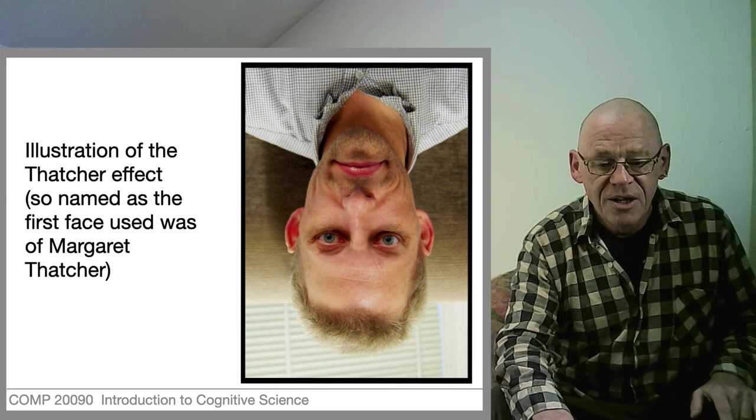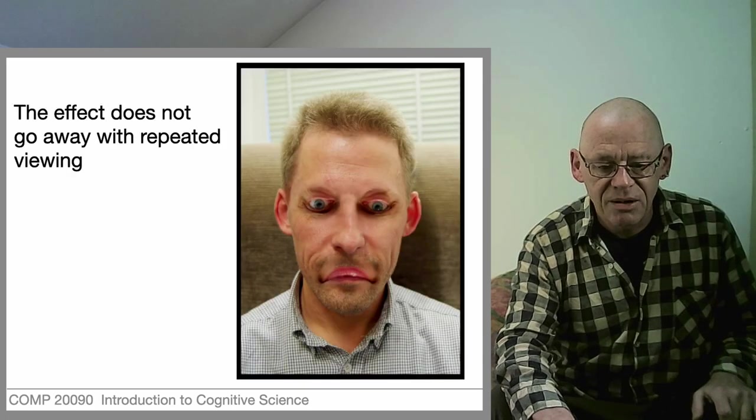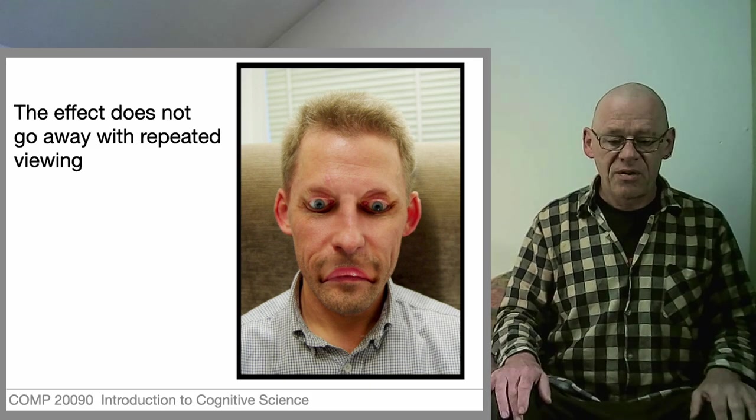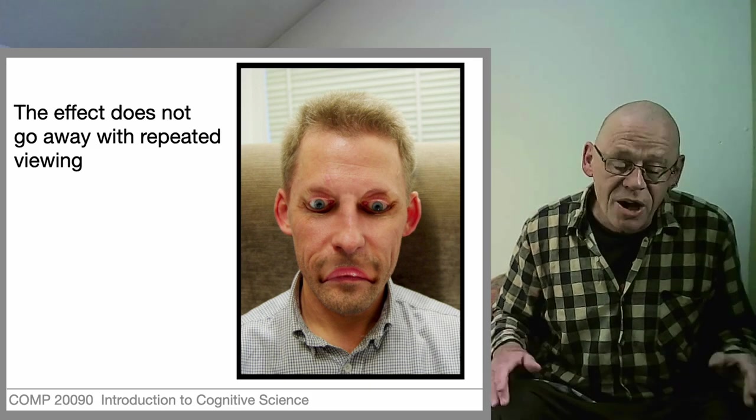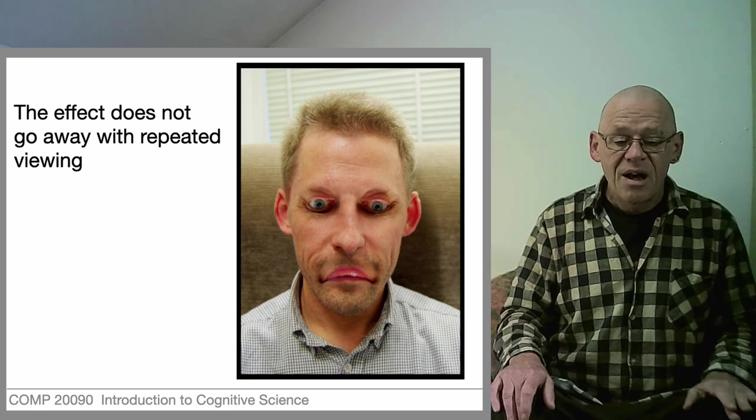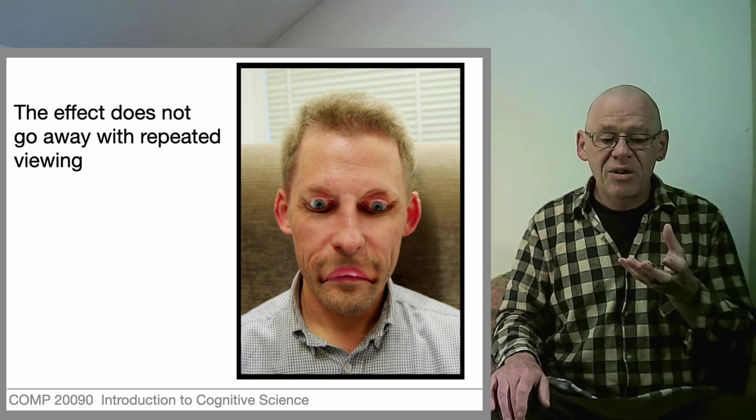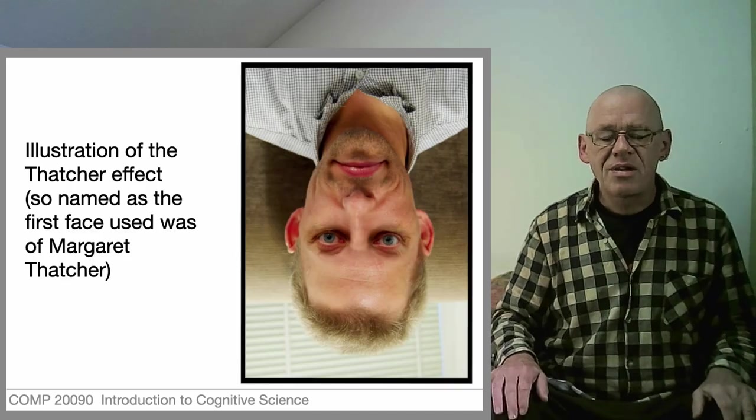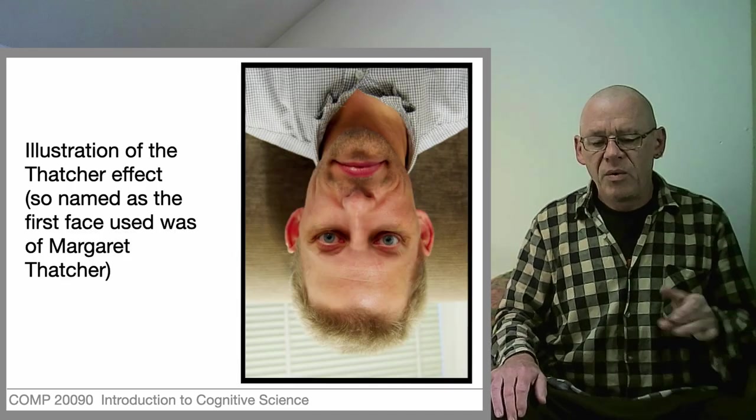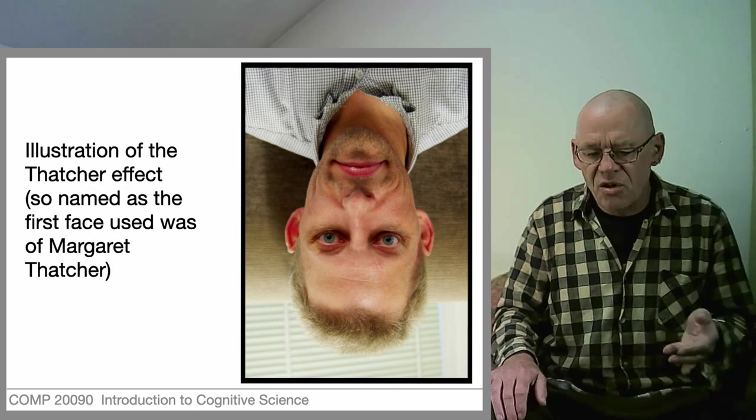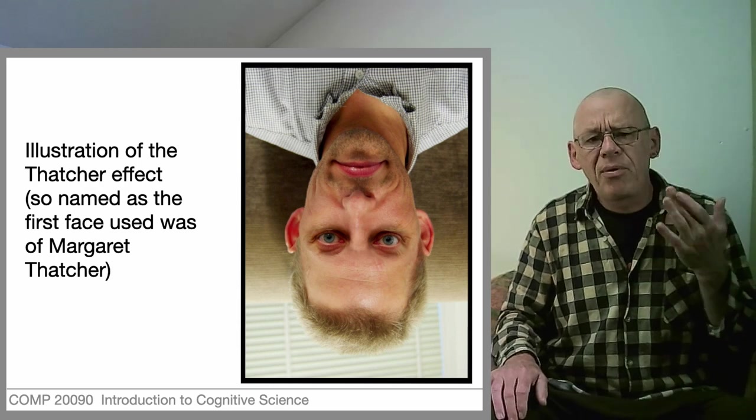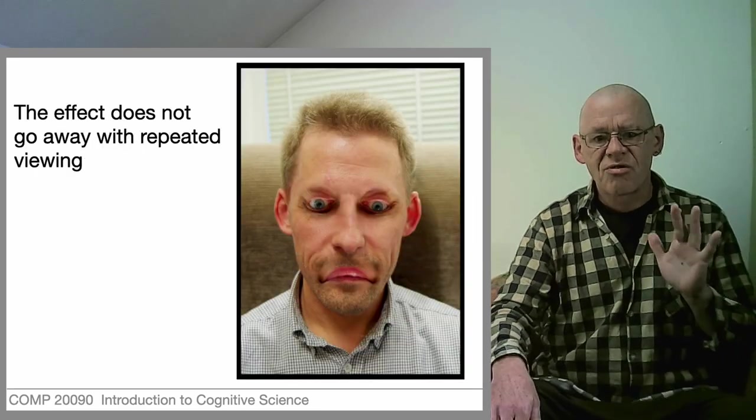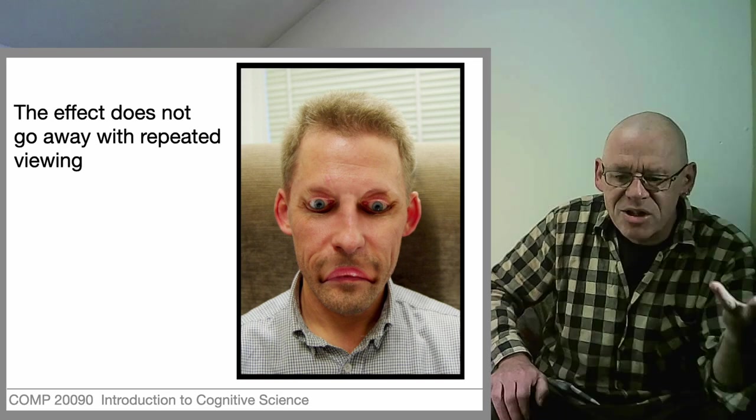This was first done with an image of Margaret Thatcher's face, which is why it's called the Thatcher effect. Let's just turn that around and, oh my god, is it grotesque. Look at that. Now we can see what the manipulation done was. It's been photoshopped so that the eyes are upside down and the mouth is upside down. That was not obvious when it was inverted. We see eyes, we see mouth, we see nose, we see ears, but we're somehow not putting all those bits together.